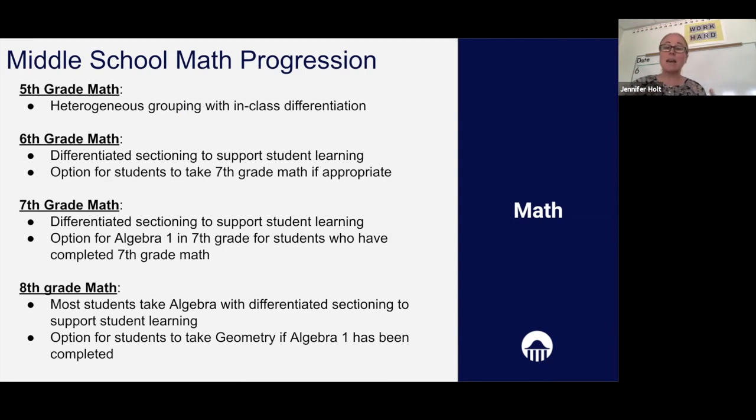In seventh grade, we continue with differentiated sections, and there is an option for seventh grade students who have completed seventh grade math already to take Algebra 1 in seventh grade. In eighth grade, most of our students are taking algebra. Again, we have the differentiated sections, and there are also some students who are taking geometry if they've completed Algebra 1 and are taking geometry in eighth grade.